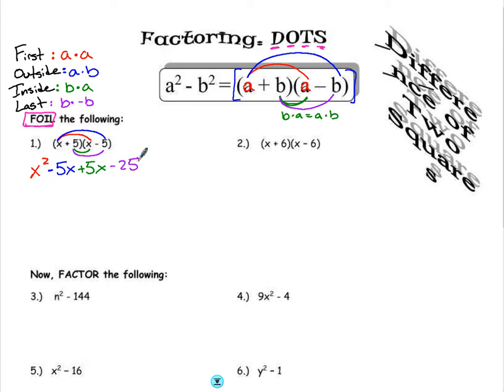Now that I FOILed correctly, I can combine like terms because this is a positive 5x and a negative 5x. Those are going to cancel each other out and become 0. So what I'm left with is x squared minus 25. For DOTS, this is very important because what's being squared here is x, and what's being squared with the 25 is 5. So my a is x, my b is 5.